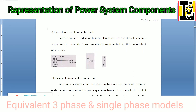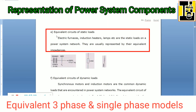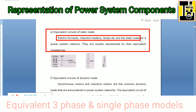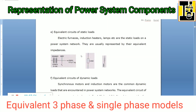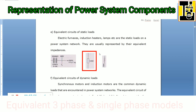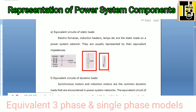The equivalent circuit of static loads: electric furnaces, induction heaters, and lamps are static loads on a power system and they are usually represented by their equivalent impedances. Here a static load of 60 megawatt with 0.9 power factor is connected, and it is represented symbolically as a resistor in series with a reactor.